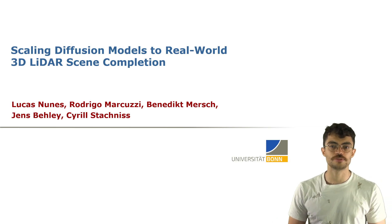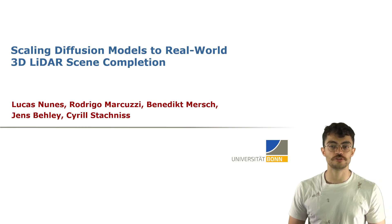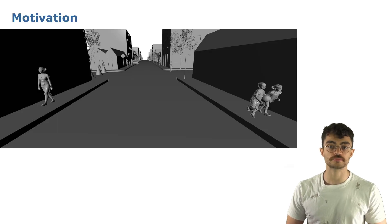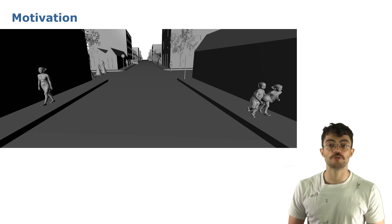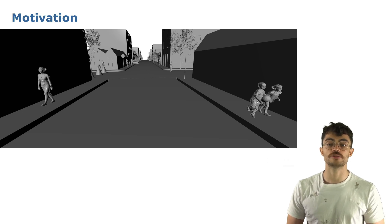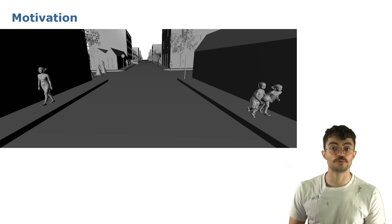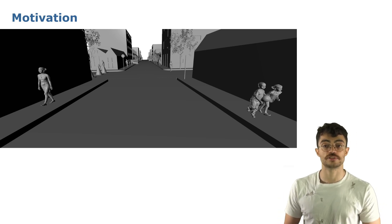Hi, I'm Lucas Nunes and I'm here today to talk about the diffusion models and how to scale them to real-world 3D LiDAR data and achieve scene completion. In an outdoor dynamic environment, the robot needs to understand its surroundings to be able to safely navigate through it. For self-driving cars, we usually use cameras, radars, and LiDARs to achieve that.